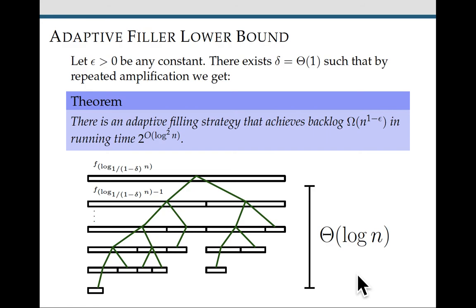So that's the amplification lemma, and it turns out if we want to achieve backlog n to the 1 minus epsilon for some constant epsilon, then there exists a delta, also constant, such that if we start with a function for achieving constant backlog, and amplify it log n times using the parameter delta, we get this function for achieving n to the 1 minus epsilon backlog.